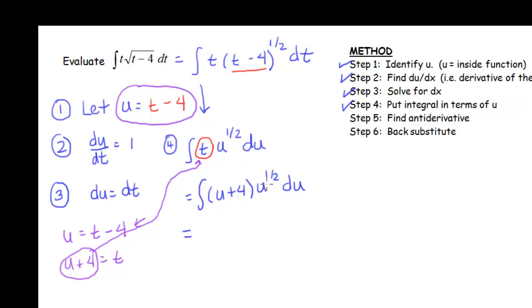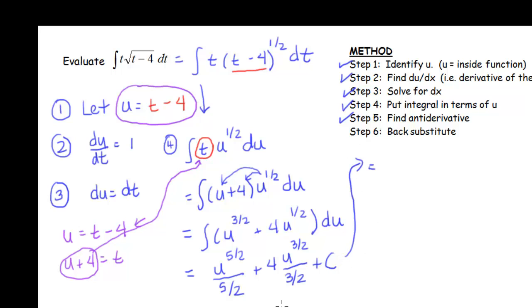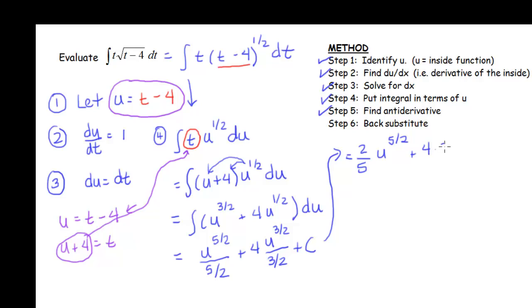So if you find that not all of your original variable will cancel out, see if you can use this technique of solving the original substitution for your variable so you can put it in terms of u. Let's actually compute this antiderivative. Before I start, I want to distribute u to the 1/2 to both terms. That gives me u to the 3/2 plus 4u to the 1/2 du. Now I'm ready to do my antiderivative. So I'm going to have u to the 5/2 divided by 5/2, plus 4u to the 3/2 divided by 3/2, plus c.